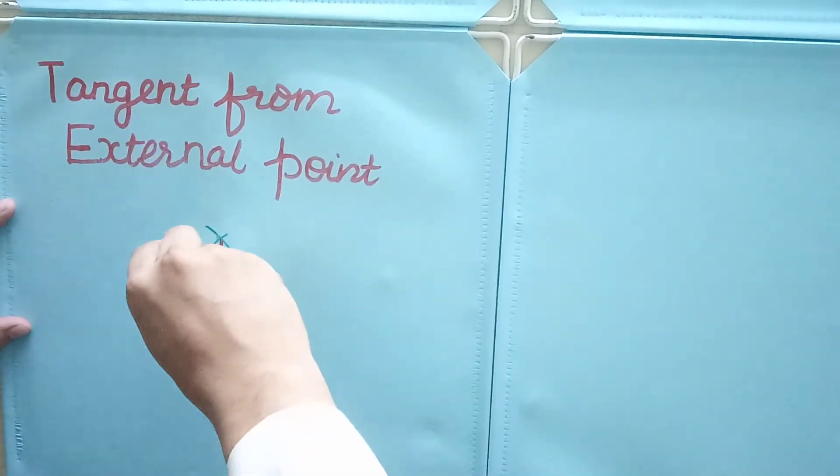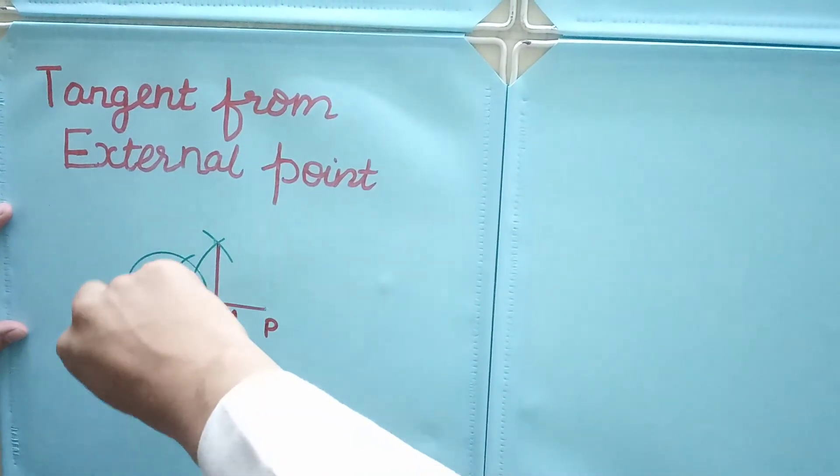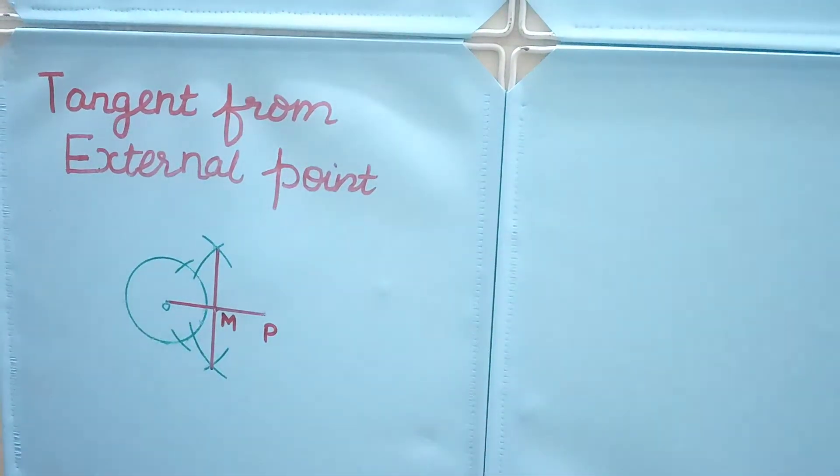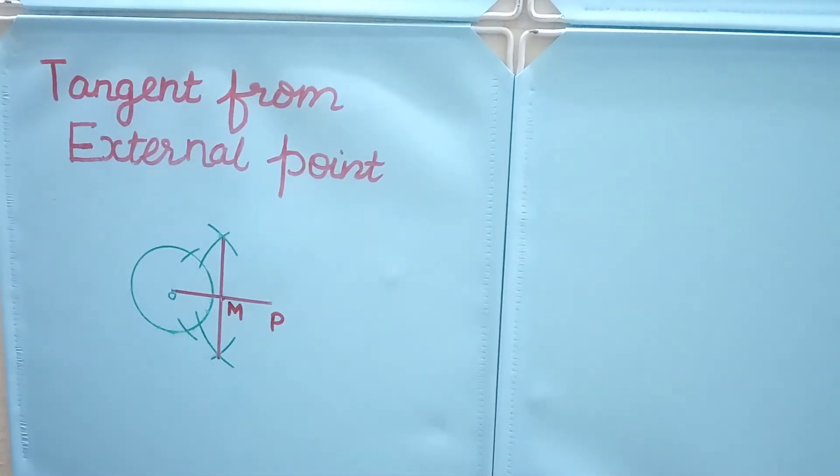Put an arc on the main circle. The points at which the arc cuts the main circle are the tangent points T1 and T2.